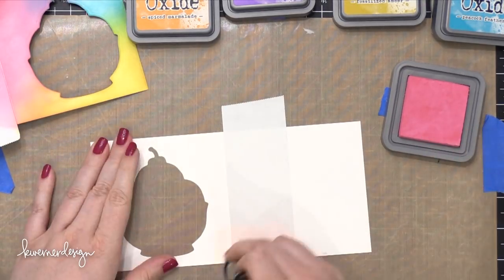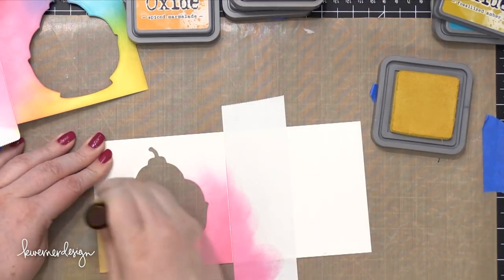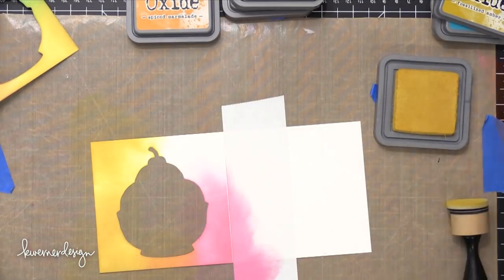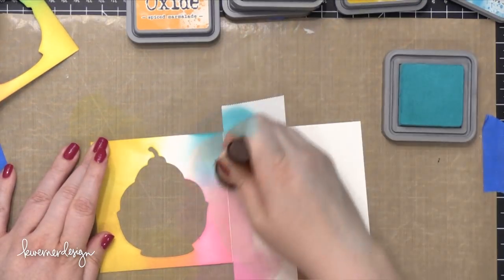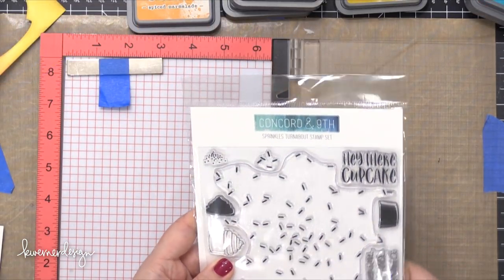So for the second panel, which is the one that's just inside the first fold, I used the same colors, but I changed where the colors were oriented. I also overlapped these a little bit more. So there's a little more green, a little bit more purple, and also some orange.